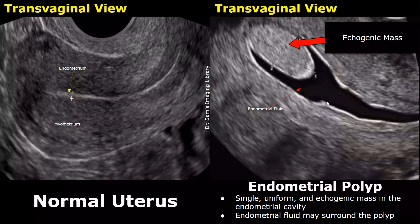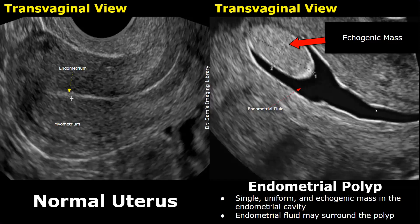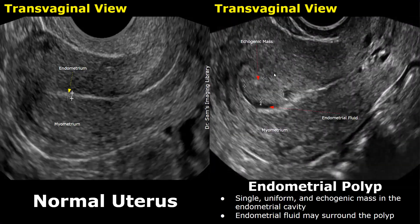In this image, along with an echogenic mass in the endometrial cavity, we have anechoic fluid surrounding the mass. Sometimes an endometrial polyp may be surrounded by endometrial fluid. This is another image showing an endometrial polyp occupying the endometrial cavity, with a small amount of fluid around the mass.